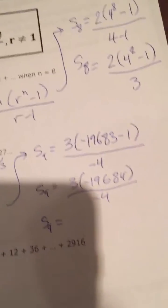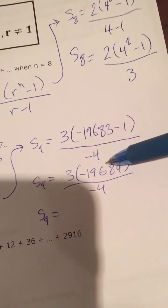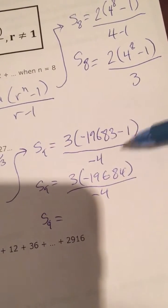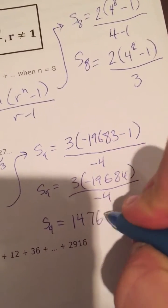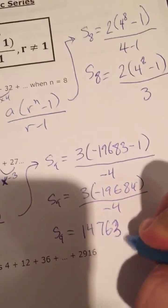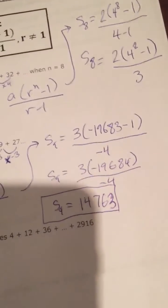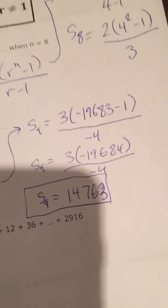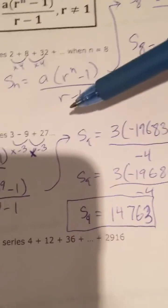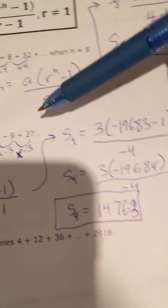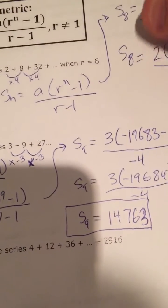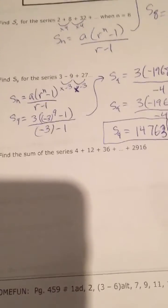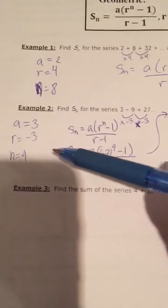Continuing, 3 times negative 19,684 divided by negative 4 gives 14,763. It's important to notice that it's a whole number — there are no decimal numbers here, so when you add whole numbers together, you end up with a whole number. So those are the first two examples: one with a positive ratio, one with a negative ratio.